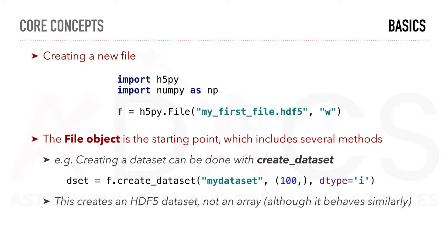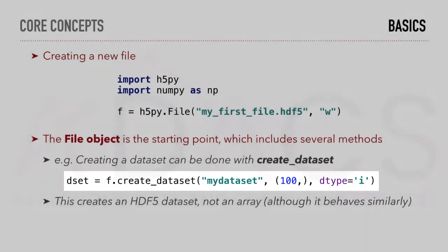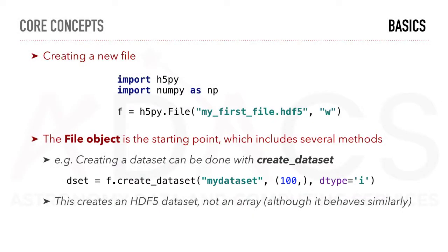The file object is the starting point which includes several methods. For example, creating a dataset can be done with create_dataset. This creates an HDF5 dataset, not an array, although it behaves similarly.